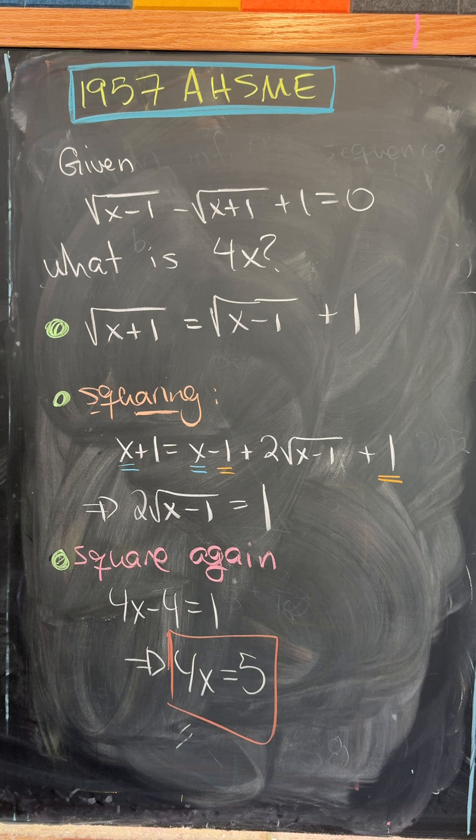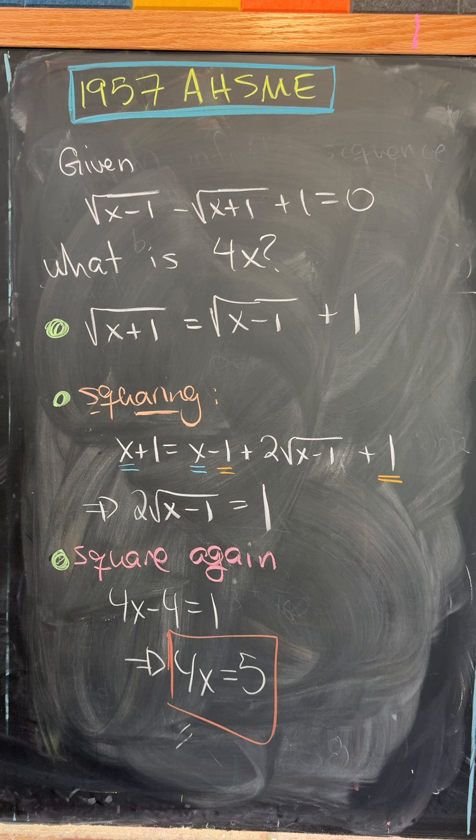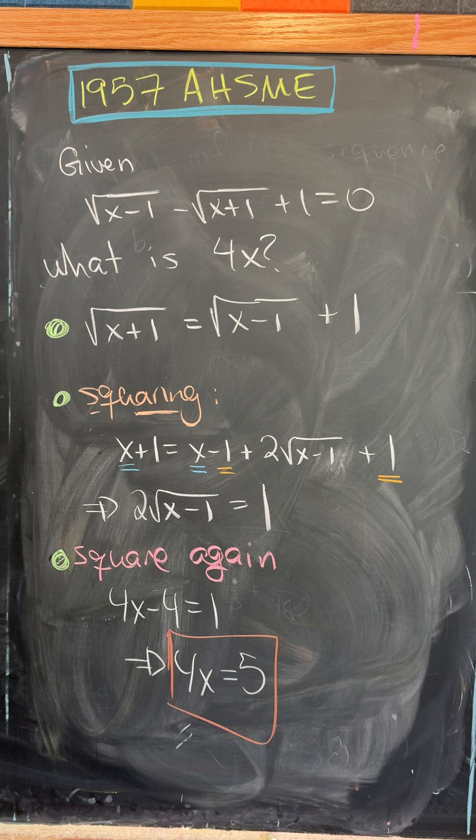Now, since we squared twice, we really need to make sure that this is a solution. Otherwise, we could have a phantom solution. But plugging x equals 5 over 4 back into the original equation, you'll see that it is satisfied, and thus we're good to go.